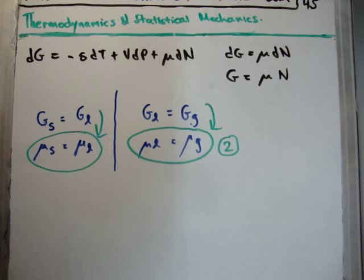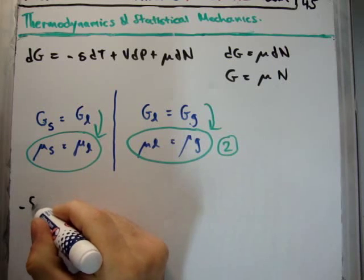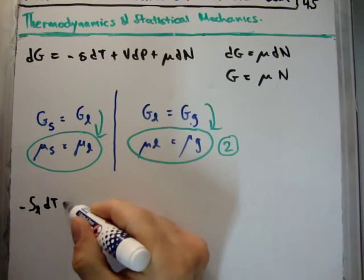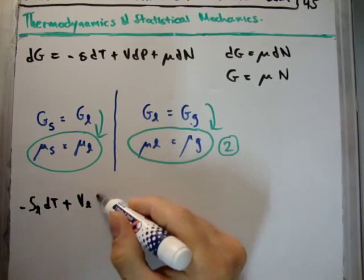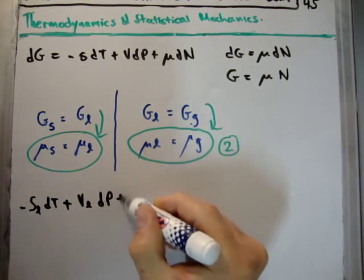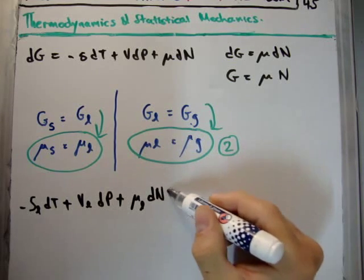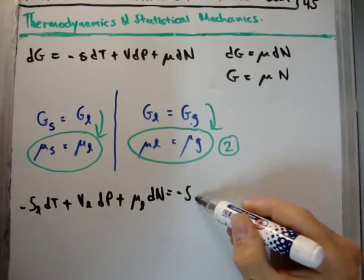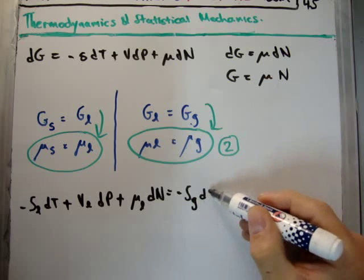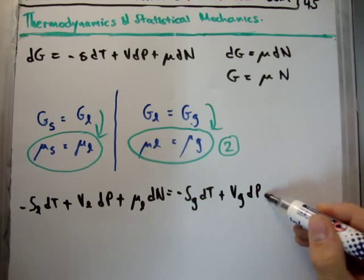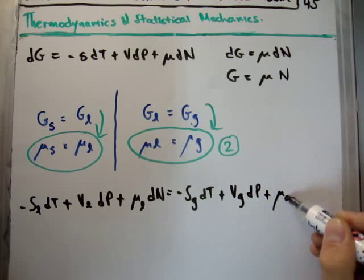So let's look at the thermodynamic identity here. We have minus the entropy of our liquid times dT plus the volume of our liquid times dP plus the chemical potential of our liquid times dN is equal to minus the entropy of our gas dT plus the volume of our gas dP plus the chemical potential of our gas dN.